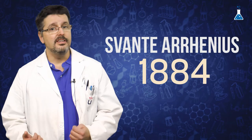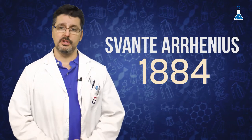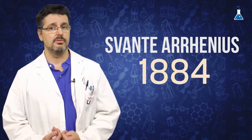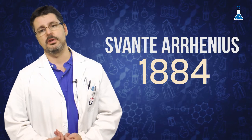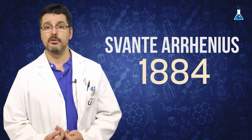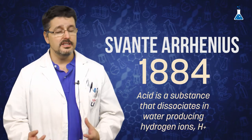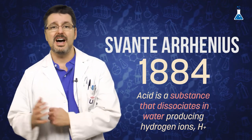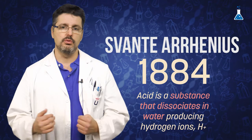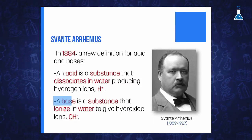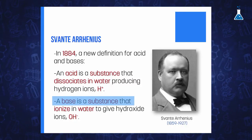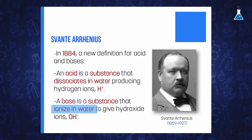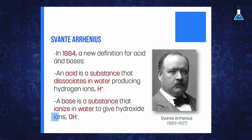It was Svante Arrhenius who, in 1884, while working on the conductivities of electrolytes, proposed a new definition for acid and base. According to Arrhenius, an acid is a substance that dissociates in water producing hydrogen ions H+ in solution. Similarly, he proposed that a base is a substance that ionizes in water to give the hydroxide ion OH−.